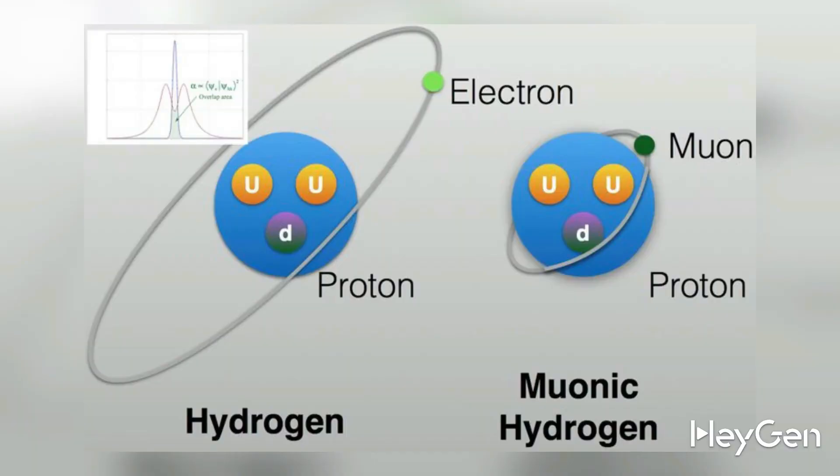The next widely known issue that calls into question our understanding of the proton's structure is called the proton radius crisis, or the proton radius puzzle. There's this thing called muonium. Under certain conditions, in a regular atom where electrons orbit the nucleus, you can replace the electrons with muons, which will then orbit the atom's nucleus instead.